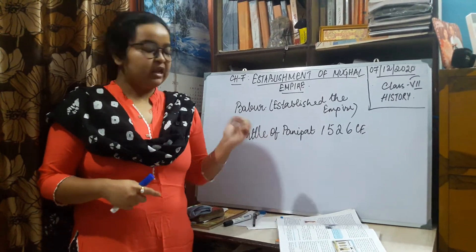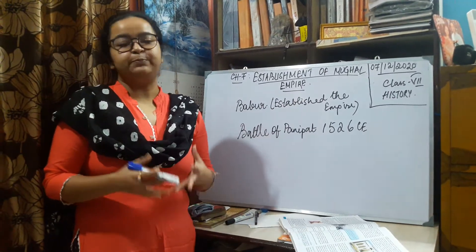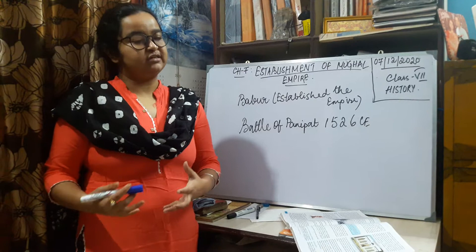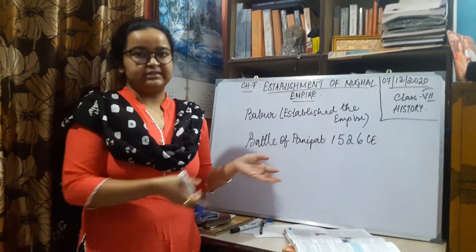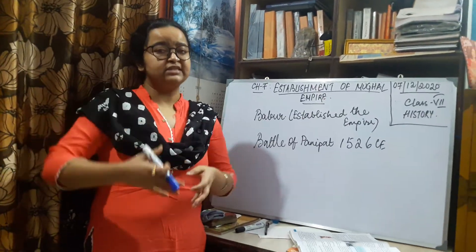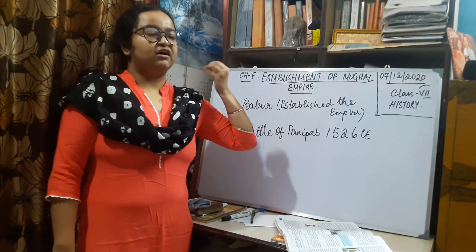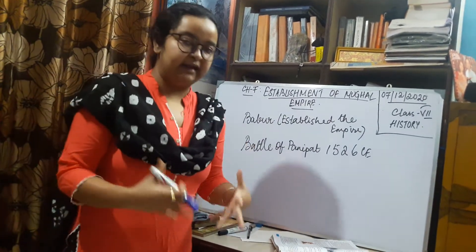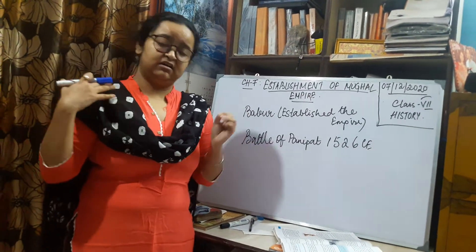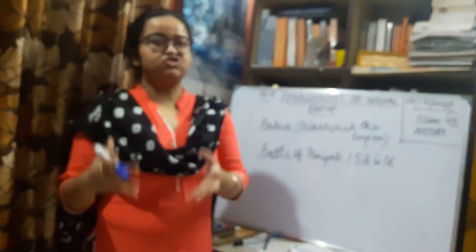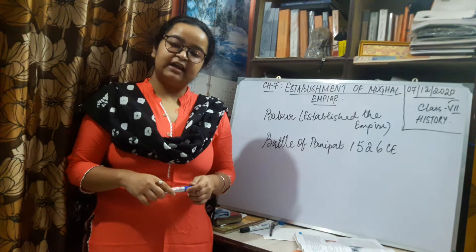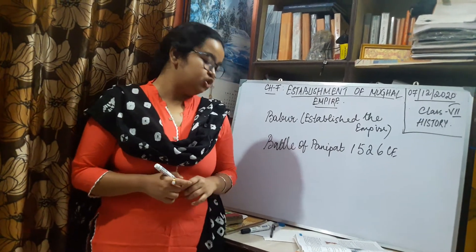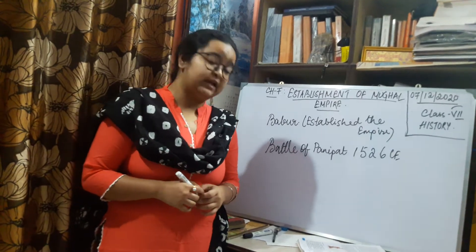How did the invasion of India happen? India was going through political instability because the later Sultans of the Delhi Sultanate era were not as good administrators as the previous ones. The various dynasties did not perform the function of able administrators, which led to political instability, and finally they lost control over the territory. Delhi Sultanate hence lost its power.